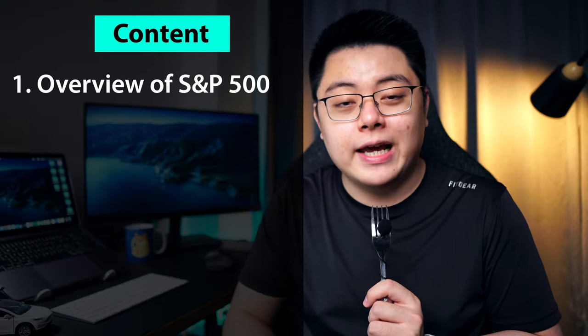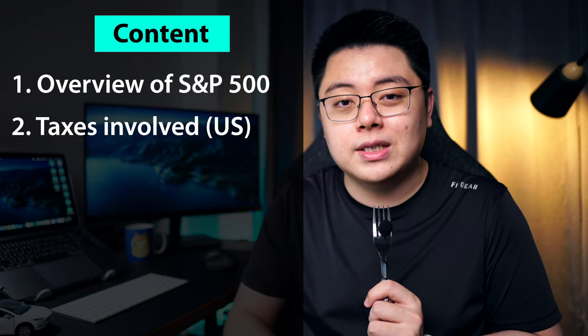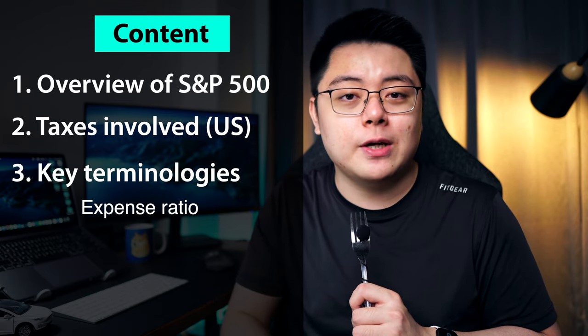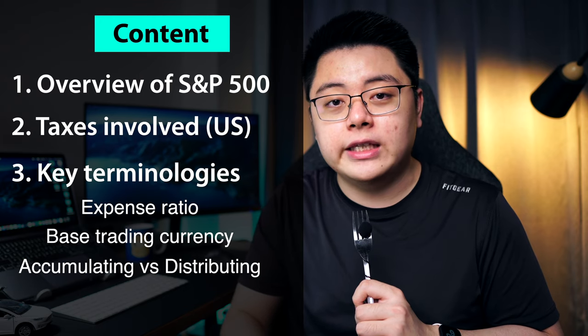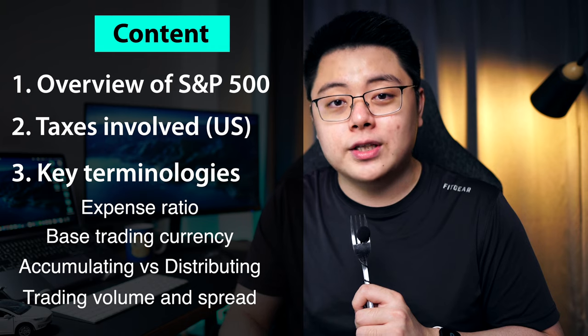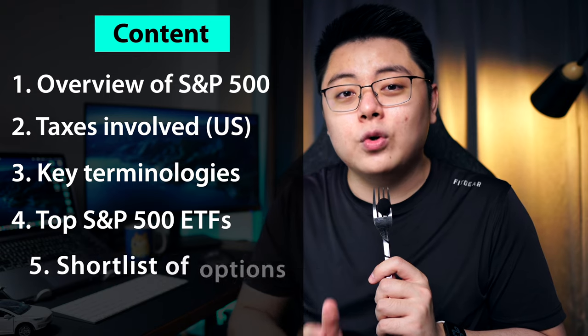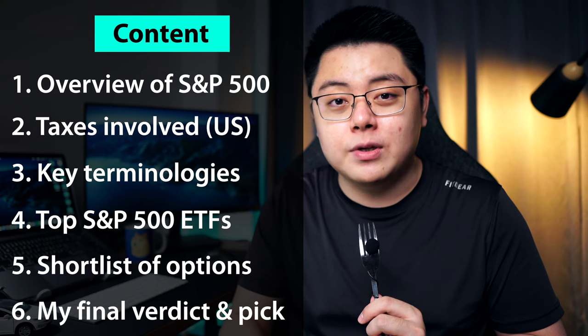This video will be segmented into the following. Firstly, I will give you an overview of the S&P 500 index. Next, I will talk about the taxes involved with US domiciled ETFs. Then I will explain some key terminologies such as the expense ratio, the base trading currency, accumulating versus distributing ETFs, and trading volume and spread. Then I will compare what I think are the top 11 S&P 500 ETFs and give you a shortlist of my top Ireland domiciled S&P 500 ETFs. And last but not least, I will give you my final verdict on which S&P 500 ETF I personally prefer.